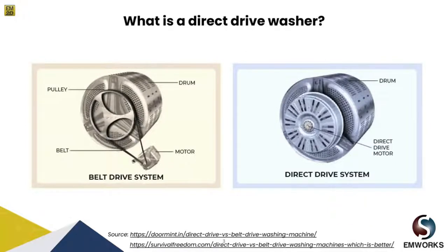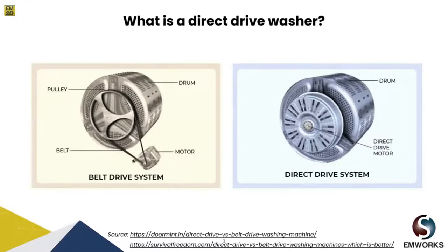In more direct terms, direct drive motors rely more on electromagnets while the belt drive motor uses friction and rotational power. For most intents and purposes, direct drive washing machines are better. They lack the parts that most frequently break on belt drive systems and are optimized for stability, reliability, performance, longevity, and energy efficiency.